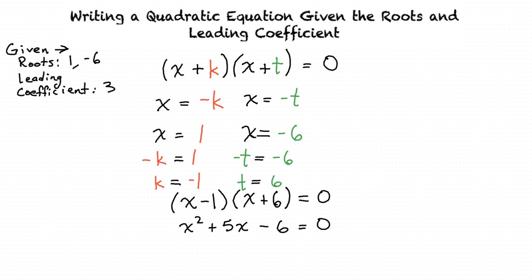Now we distribute the 3 into the whole polynomial. We write the quadratic polynomial in parentheses, and we write the 3 outside, and we now multiply the 3 by each term in the polynomial. By doing this, we find the quadratic to be 3x² + 15x - 18.